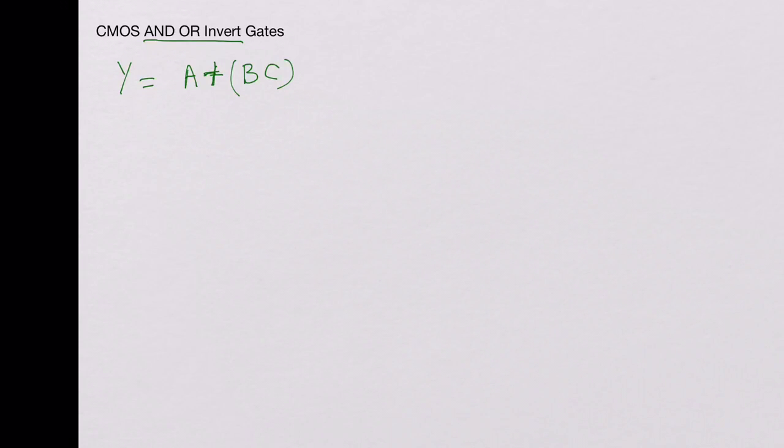If you write a truth table for this one, it would be like this: A, B, C and Y.